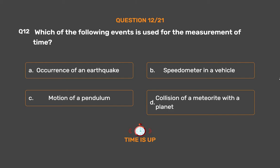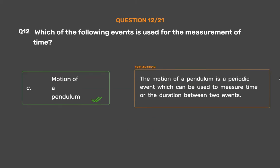The correct answer is Option C: Motion of a pendulum. The motion of a pendulum is a periodic event which can be used to measure time or the duration between two events.